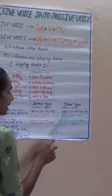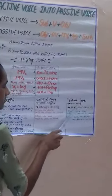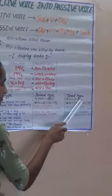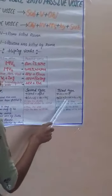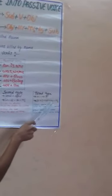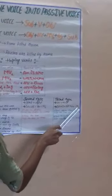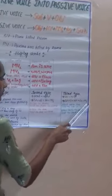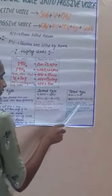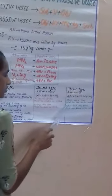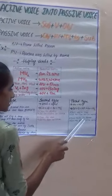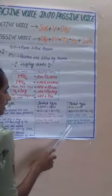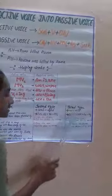Third type — helping verb plus main verb plus object. Next: let plus object plus not plus be plus main verb third form. First one: Don't waste time. Passive: Let the time not be wasted. Second one: Don't touch the flowers. Passive: Let the flowers not be touched.